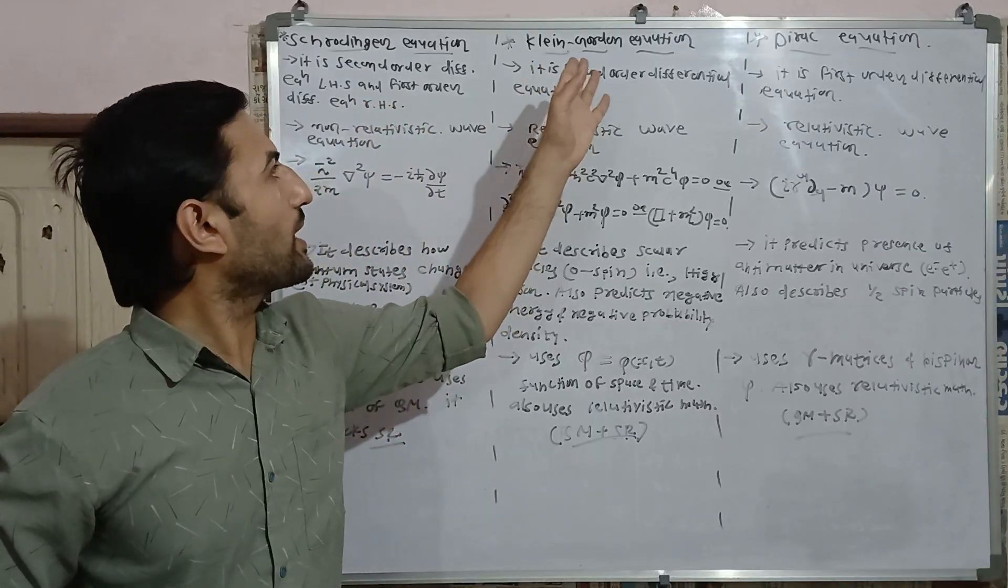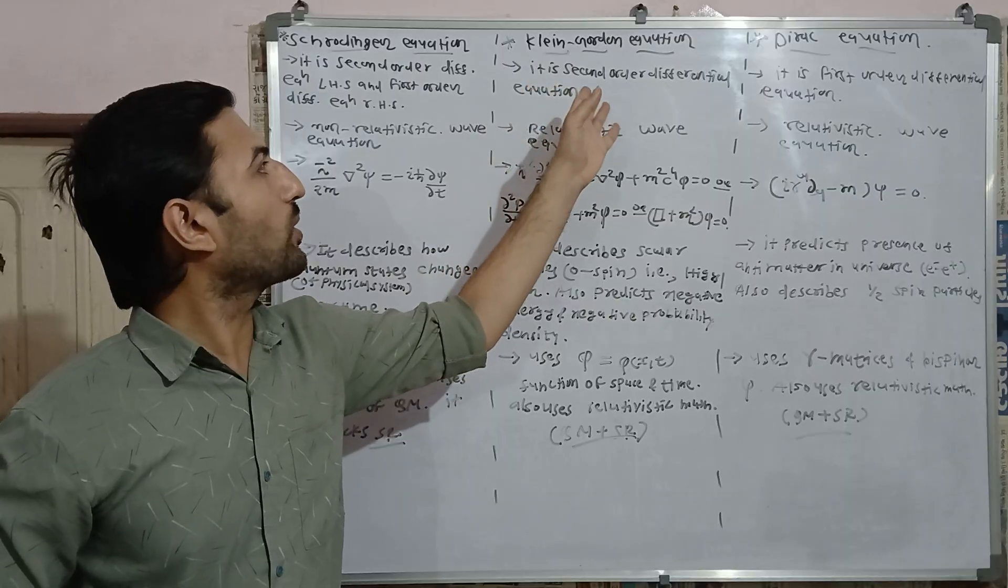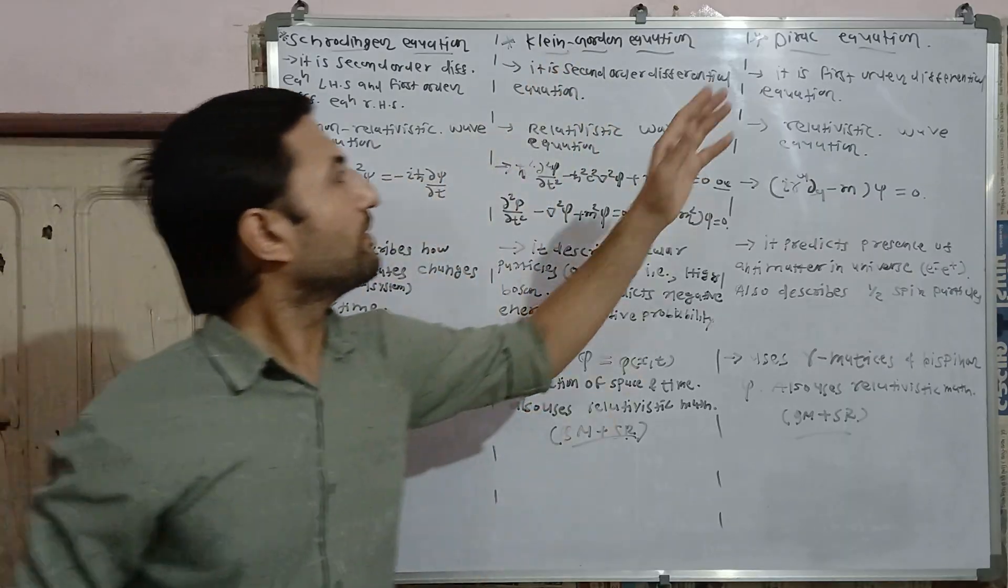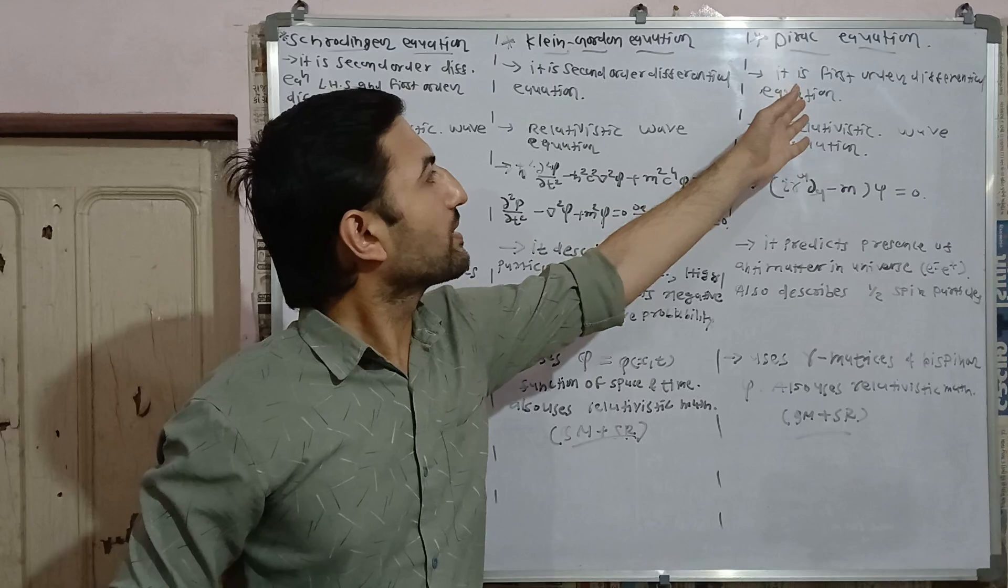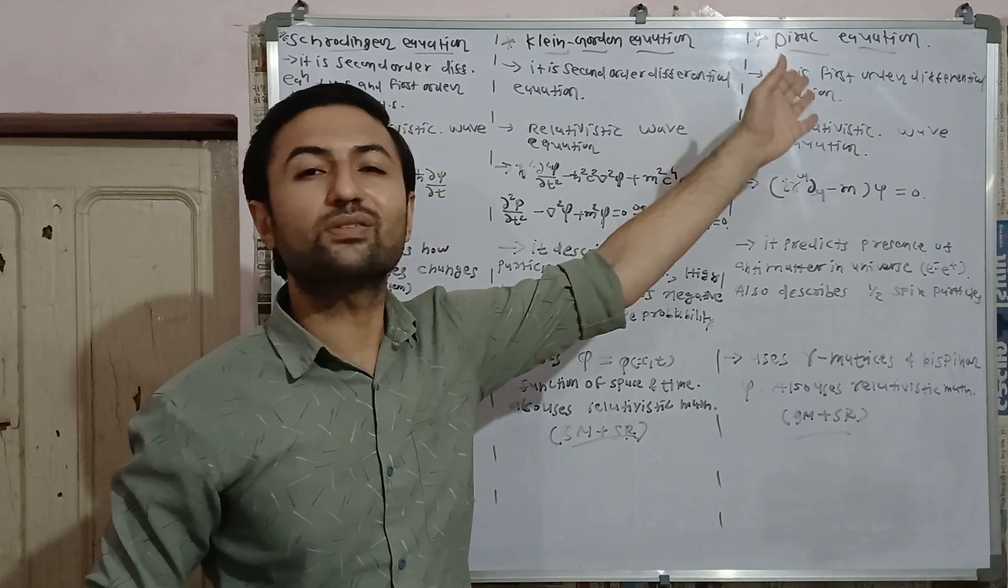While Klein-Gordon equation is completely second order differential equation while Dirac equation is completely first order differential equation.